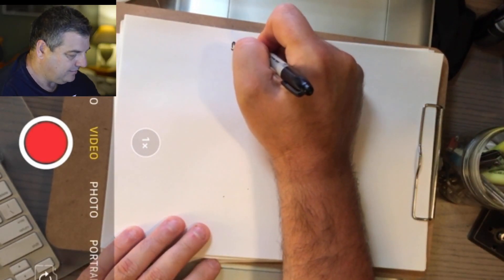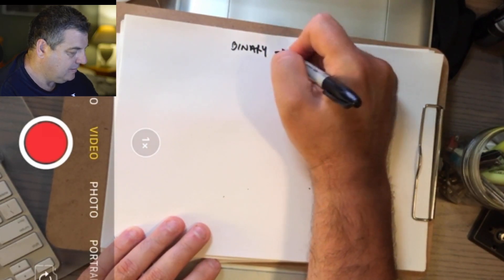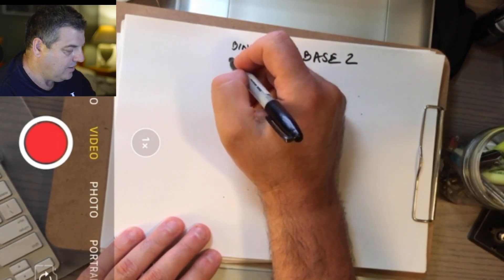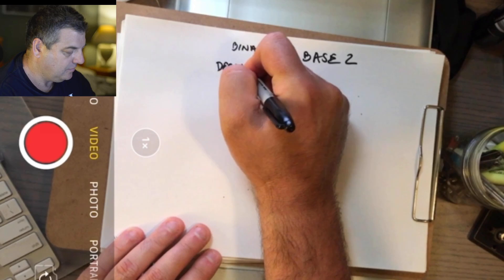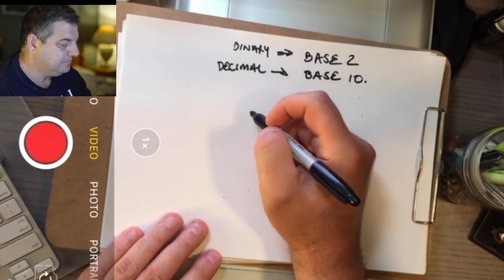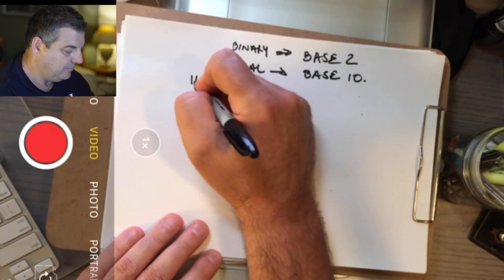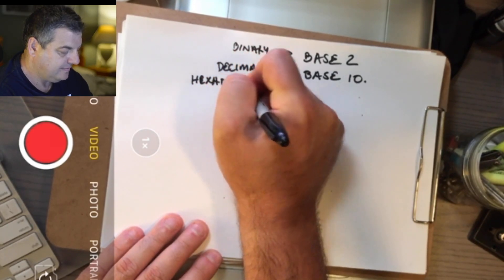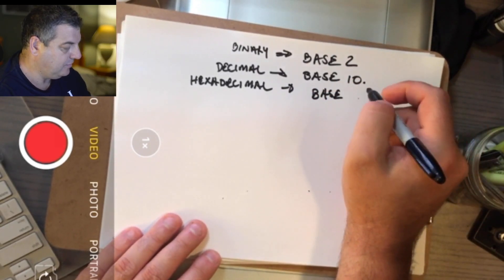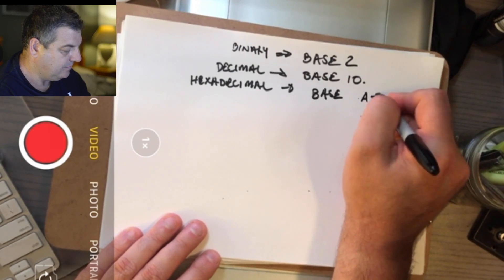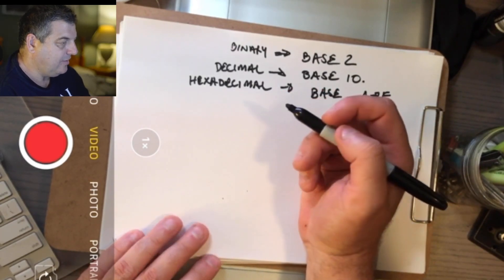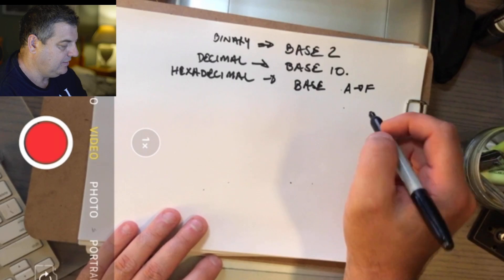With binary it's called a base 2 number system. What we use in everyday life is called a decimal system, that is a base 10. And also in computing you have a number system called hexadecimal and that is base 16. So you've got 0 to 9 and also A to F. Let's look at how the decimal system really works and then we can transfer it over to the binary system.